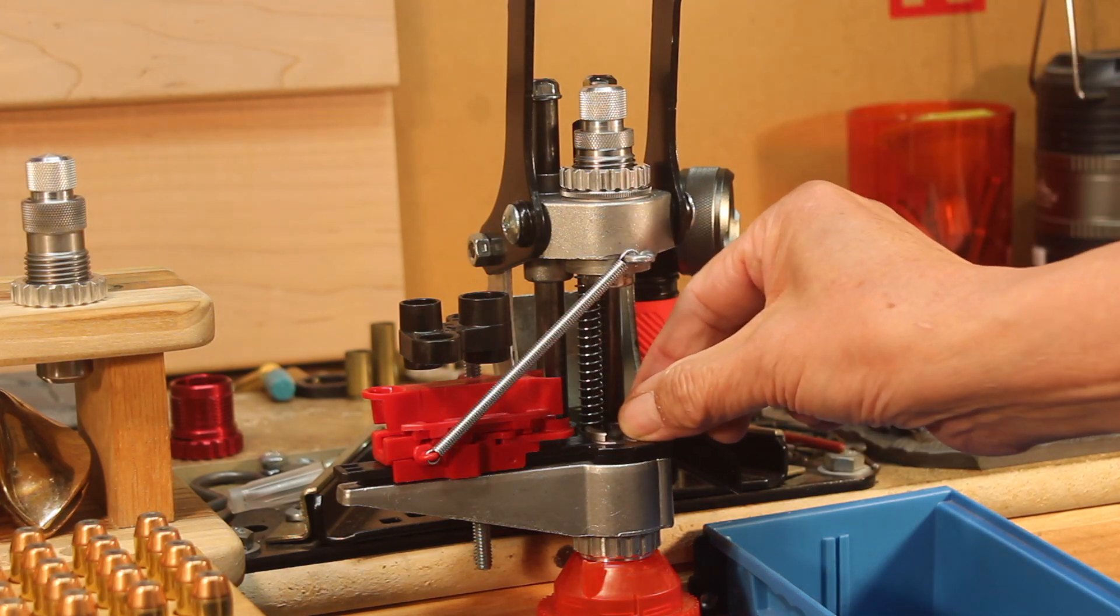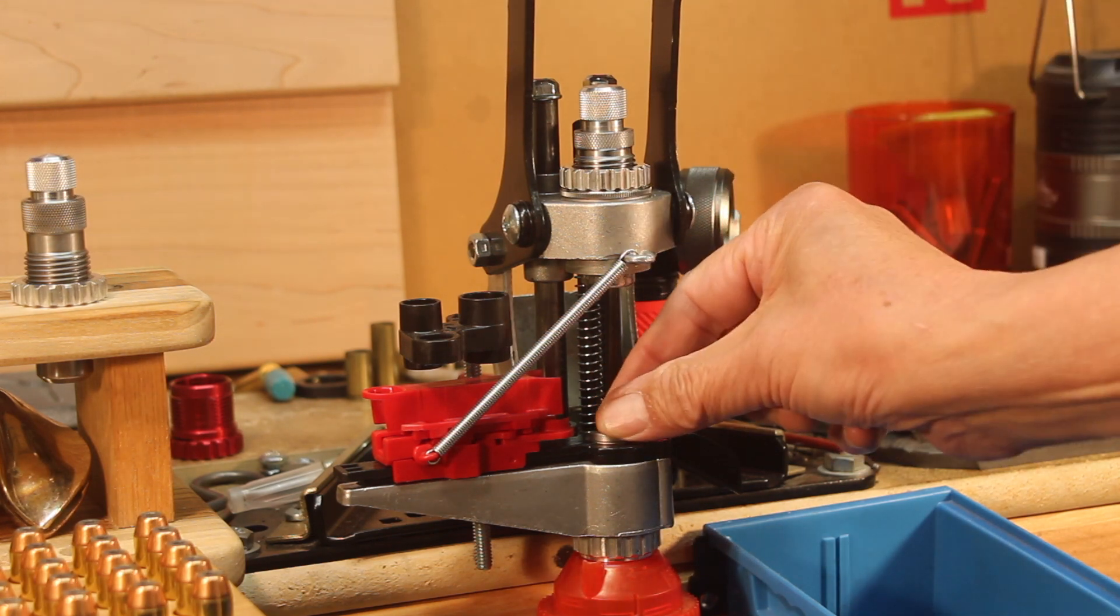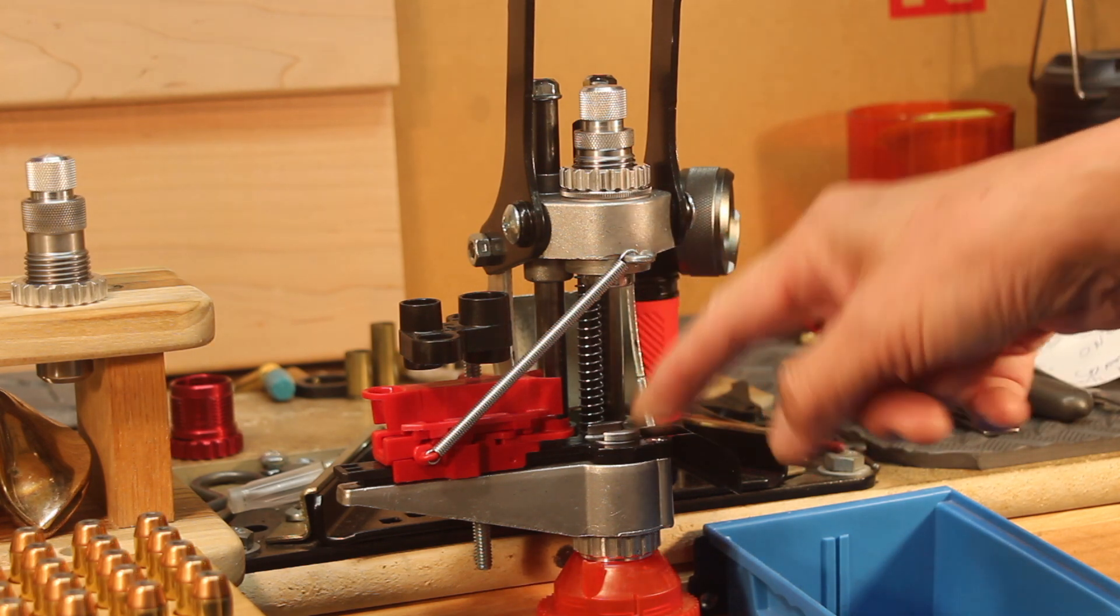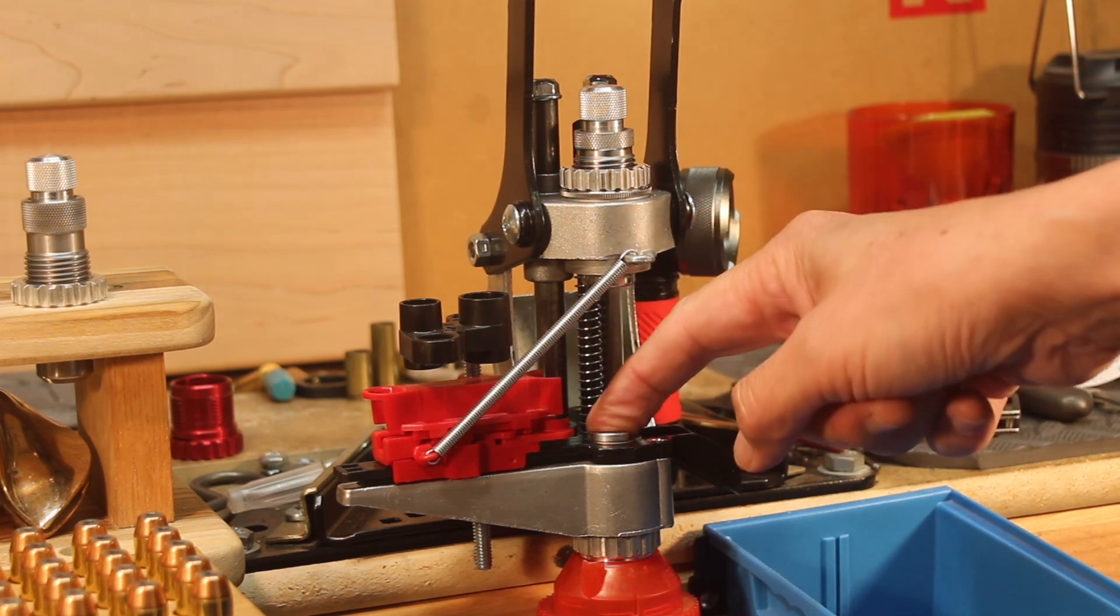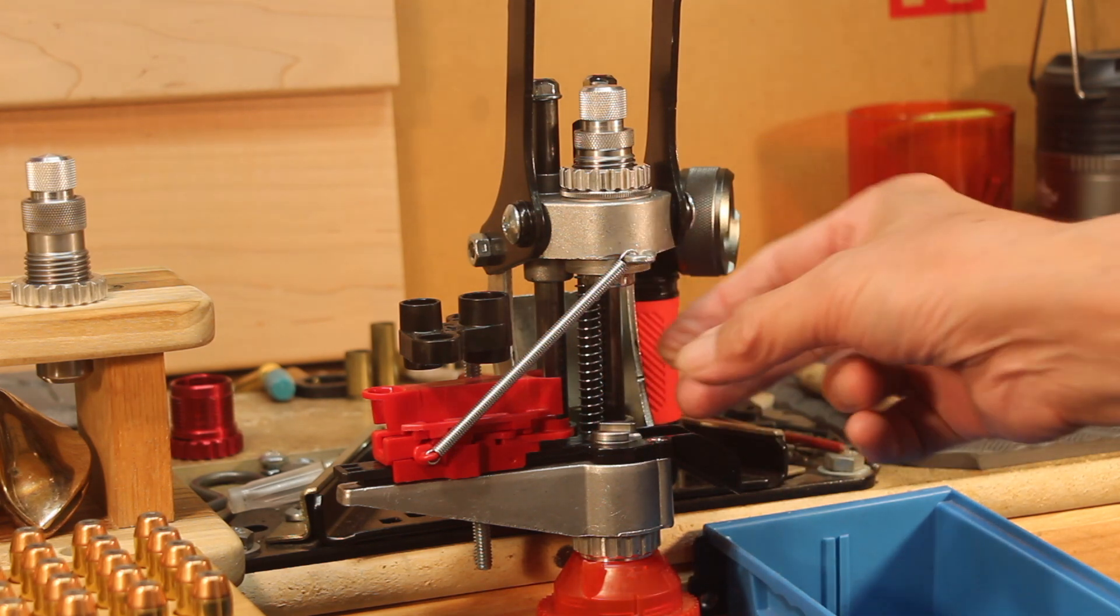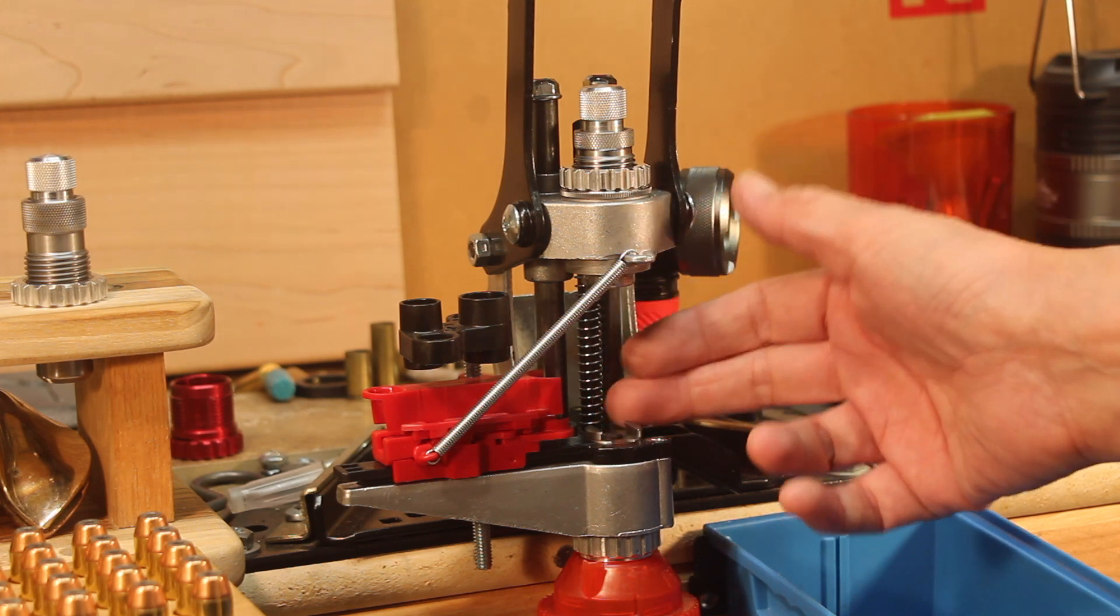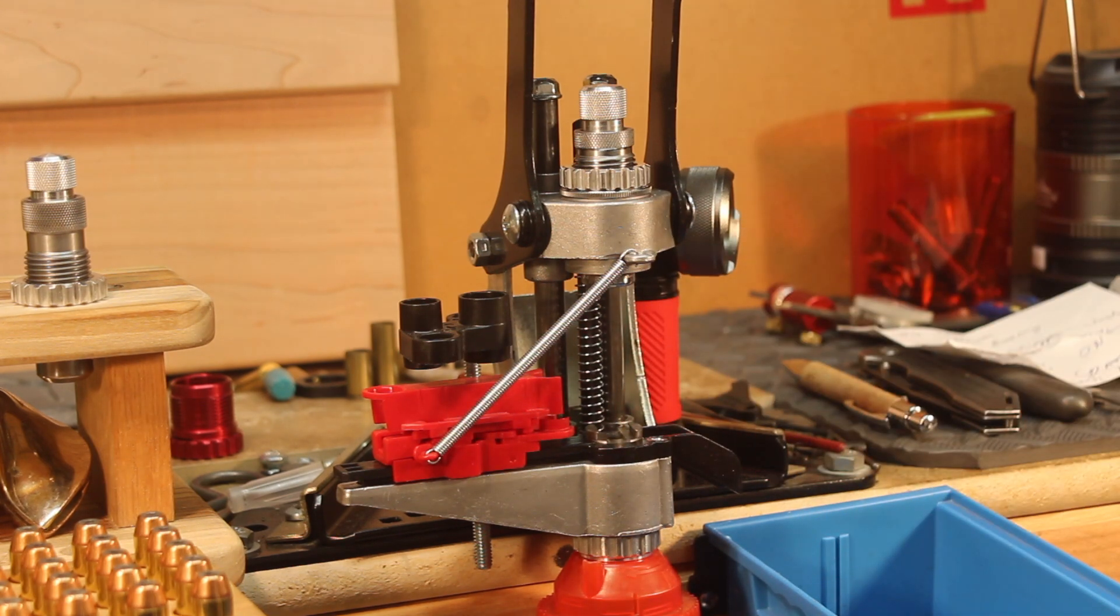He suggests, along with Dick Tickles, that you can actually use the regular shell holders as well as the X shell holder that Lee makes for this press. So if you ever want to go ahead and do certain kinds of procedures where the case doesn't slide through, use the regular shell holders.